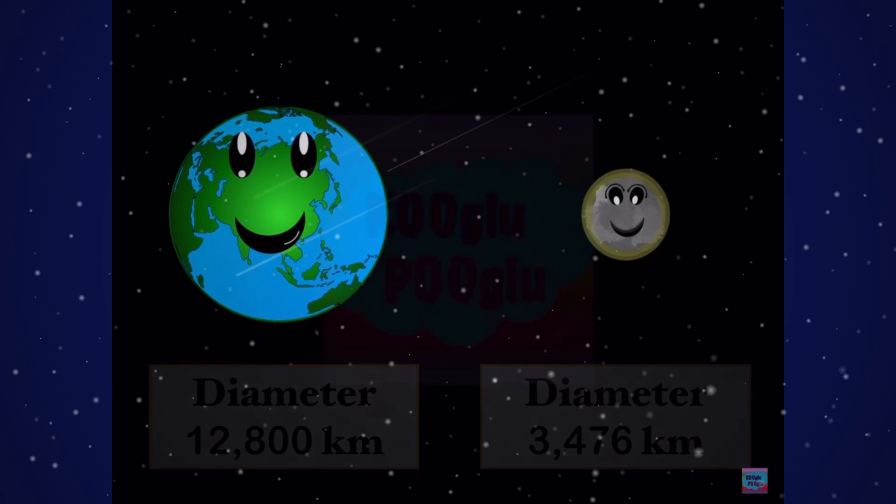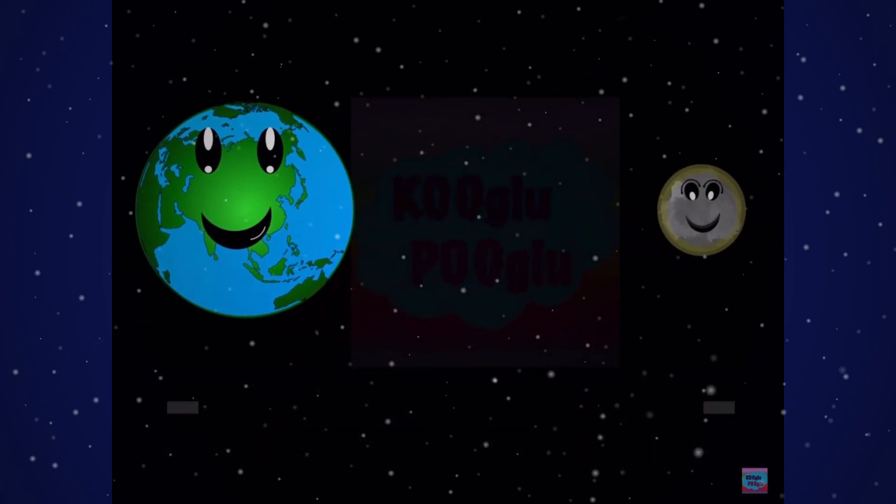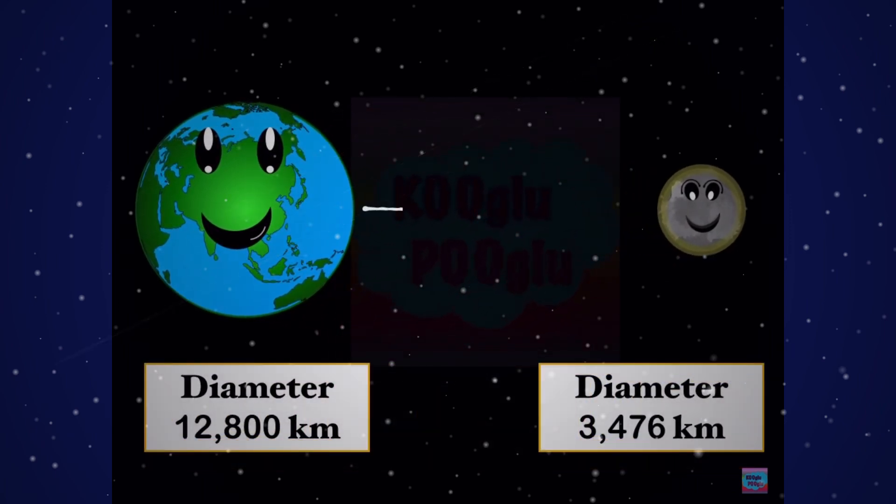So we know the diameter and distance. Let me tell you a cool fact about them. If you take the diameter of Earth and multiply that by 30, that will equal how far Earth is from the Moon.